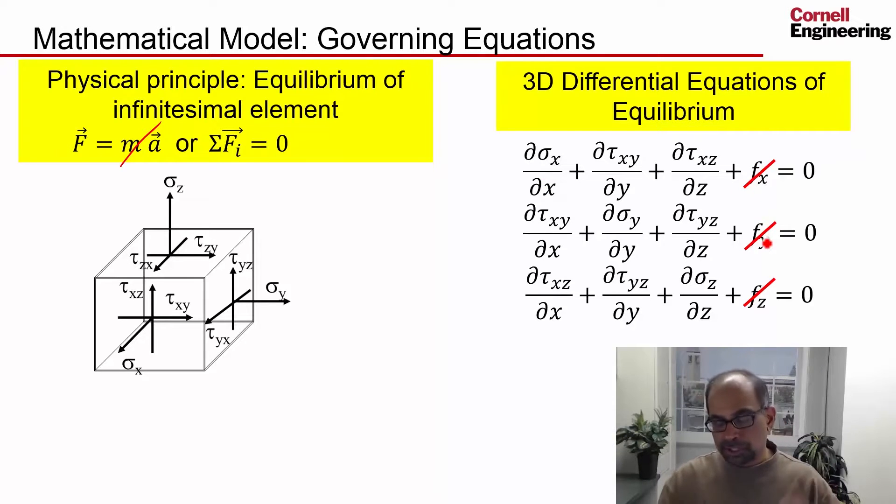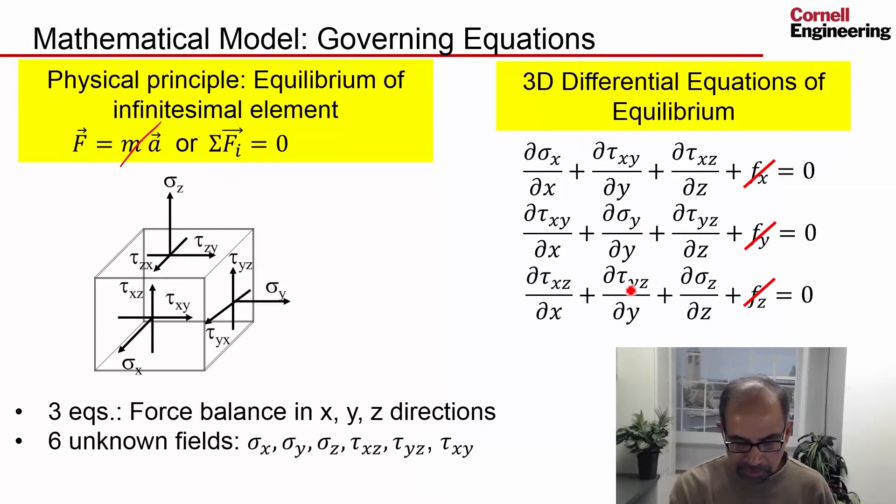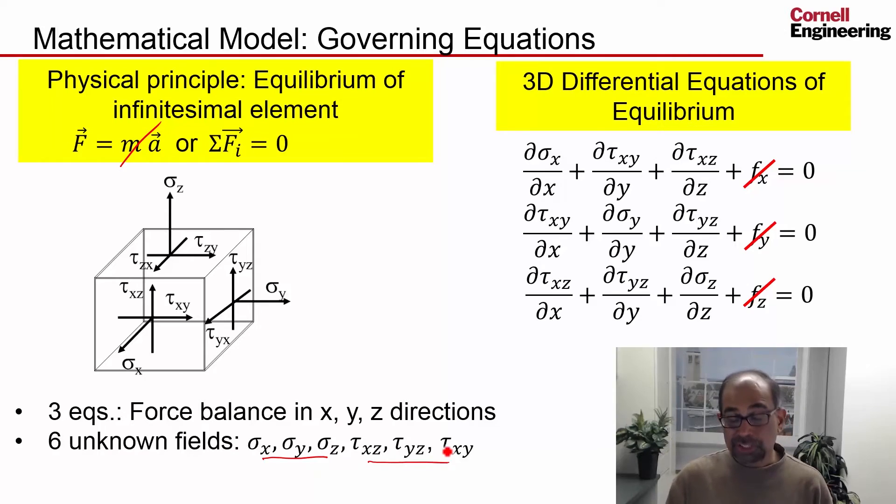We don't have body forces. Gravity is not important here. We have three equations from force balance in X, Y, and Z directions. We have six unknown fields - three normal stresses and three shear stresses. So we need to bring in additional equations to close the equation set. That's what we will look at next.